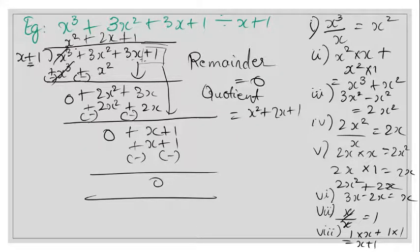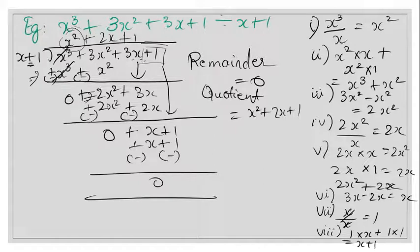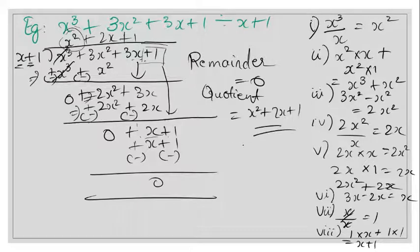Bring down +1. Step 7: x ÷ x = 1. Step 8: 1 × (x + 1) = x + 1. Sign change: x - x = 0, 1 - 1 = 0. Remainder = 0, quotient = x² + 2x + 1.